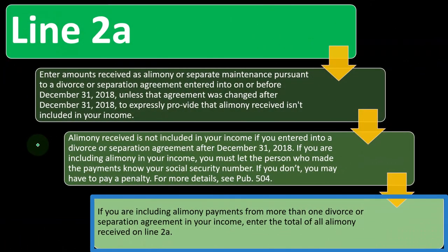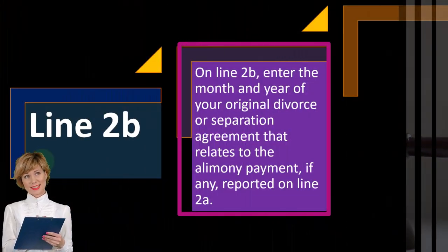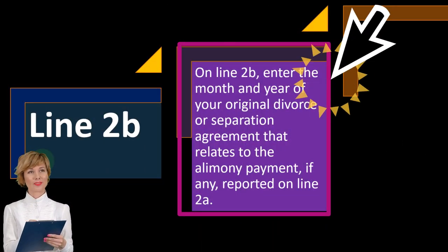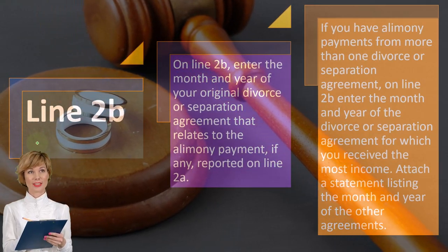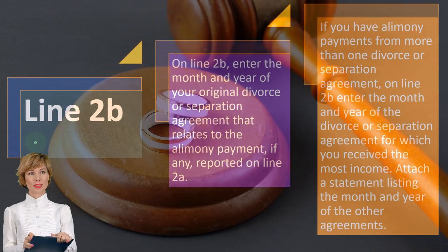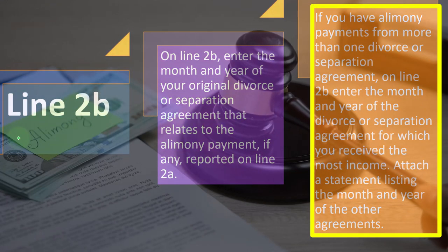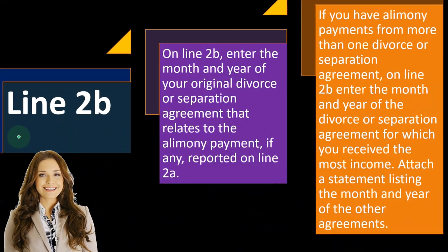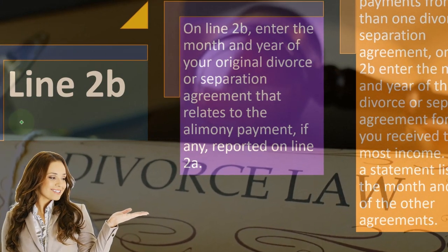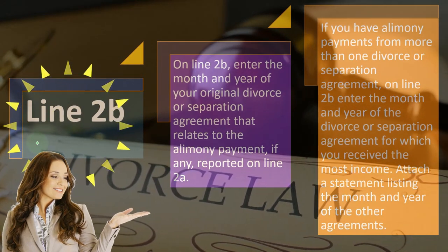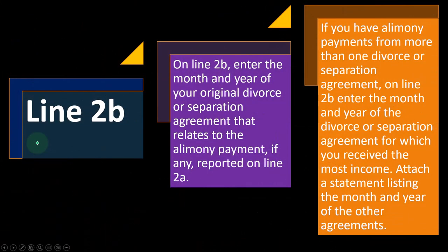If you are including alimony payments from more than one divorce or separation agreement in your income, enter the total of all alimony received on line 2a. On line 2b, enter the month and year of your original divorce or separation agreement that relates to the alimony payment reported on line 2a — this helps the IRS determine whether you're properly recording it under the applicable law. If you have payments from more than one agreement, enter the date from which you received the most income and attach a statement listing the month and year of the other agreements. That's the general idea — we'll look at some software examples in a future presentation.